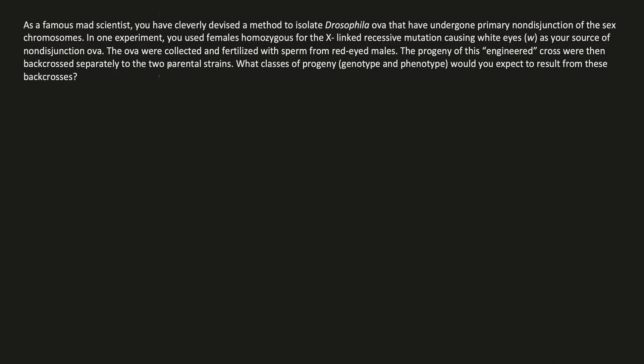Just a quick review: primary non-disjunction is when the chromosomes don't split up properly during meiosis. It can happen in meiosis 1 or 2. Either way, what ends up happening is that in the non-disjunction eggs or sperm, some gametes have double the amount of chromosomes they need and some have none. In this case, if it's in the X chromosome, you use a female homozygous for the X-linked recessive mutation causing white eyes as your source of non-disjunction ova.